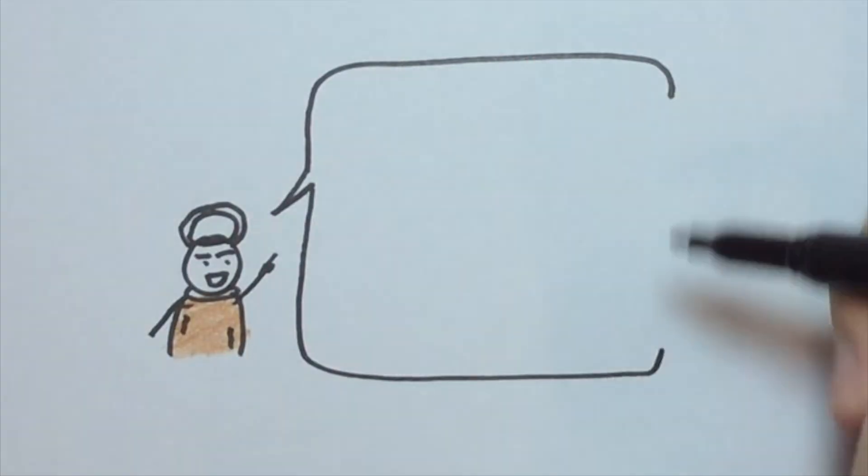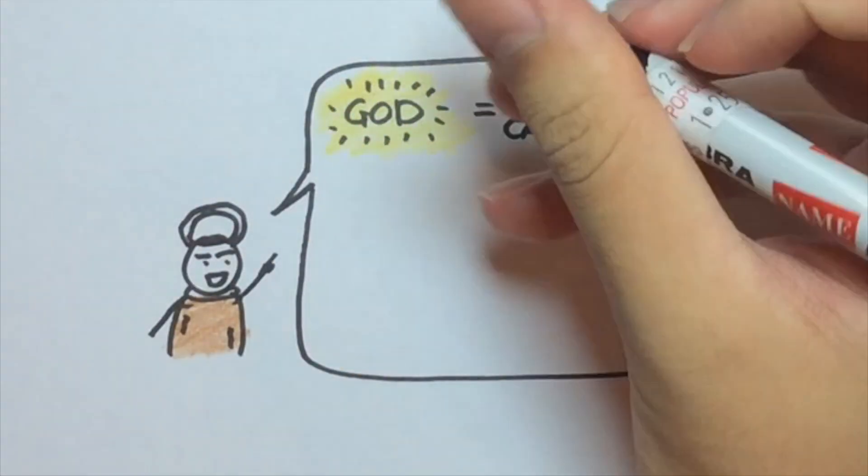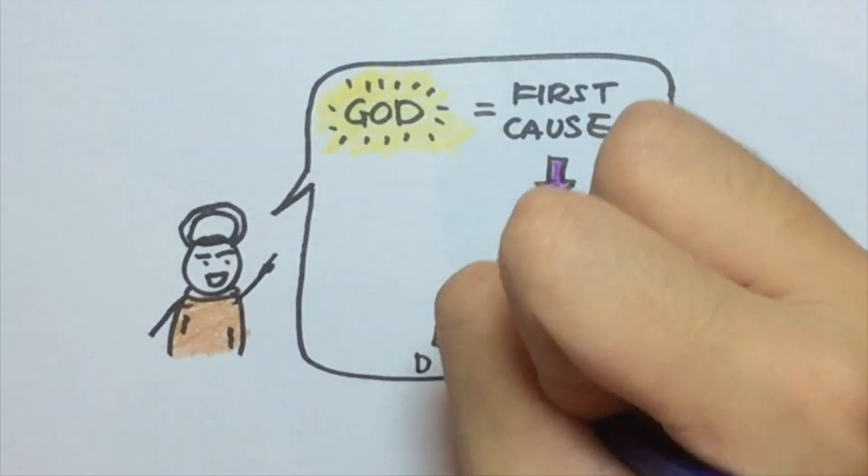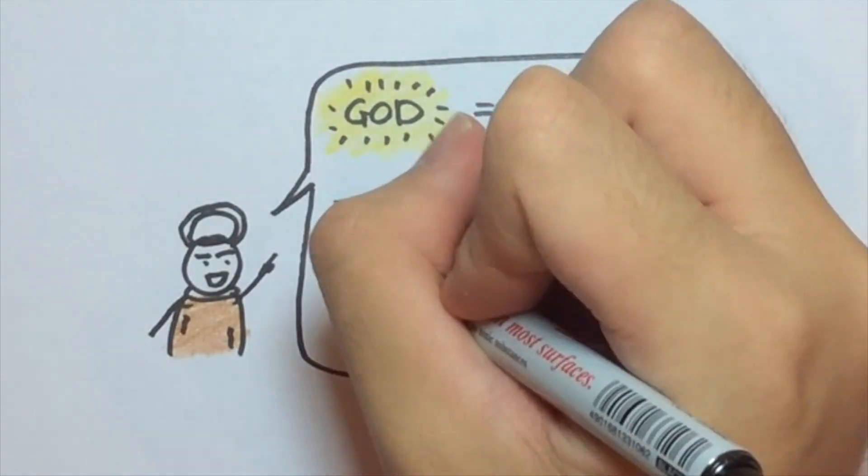So, in a nutshell, something really powerful, who is God, must have existed in order to have set off the chain of motion that produced the phenomena that we see today.